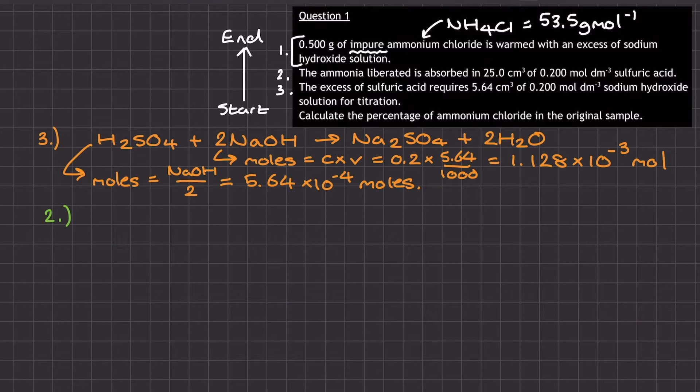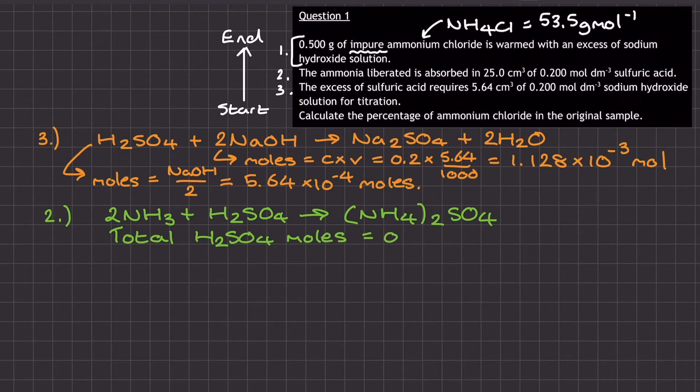Now that I've calculated the number of moles of sulfuric acid that were left in excess after stage 2 by using the information in stage 3, I can calculate the number of moles of sulfuric acid that reacted with the ammonia in stage 2. The number of moles of sulfuric acid available in stage 2 can be calculated by doing concentration times volume, and that's the concentration of 0.2 multiplied by the volume of 25 centimeters cubed over a thousand, to give me 5 times 10 to the power of negative 3 mole of sulfuric acid available in stage 2.